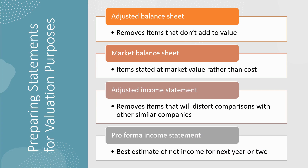Preparing statements for valuation purposes: the adjusted balance sheet removes items that don't add value, while the market balance sheet states items at market value rather than cost. Adjust the income statement to remove items that will distort comparisons with other similar companies. The pro forma income statement is the best estimate of net income for the next year or two.